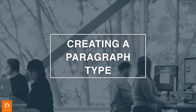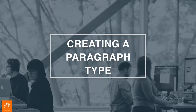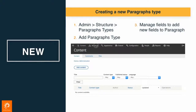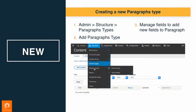To get started, the first thing you do is create a paragraph type, the same as with a node or blocks. Similarly, you go to Structure on the site and you click on 'Add a paragraph type.' Once you do that, you manage the fields. I'm just going to step through a quick little video here.